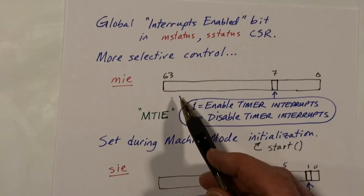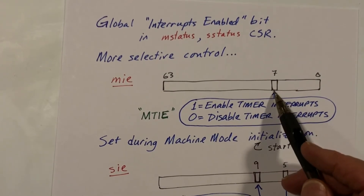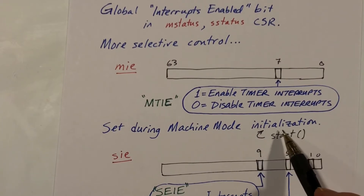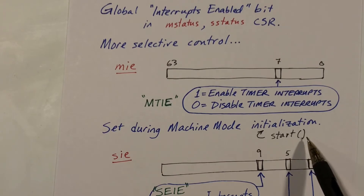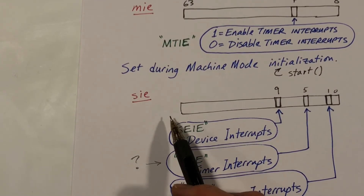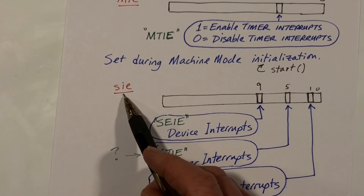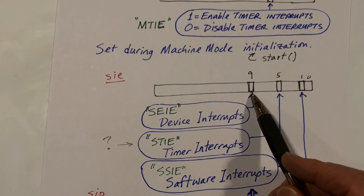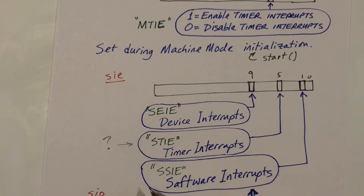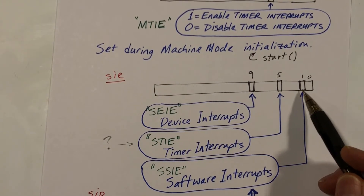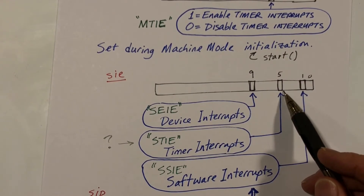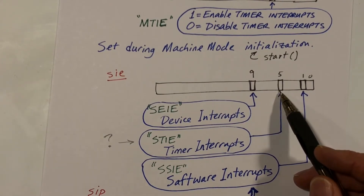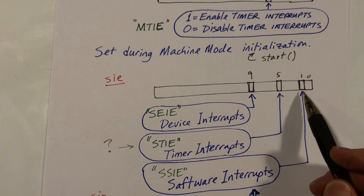For selective control, we have a bit called MTIE — machine timer interrupt enable — and we set it to one during the initialization phase in the start function, which executes in machine mode. At the supervisor mode level, the SIE register has bits we're interested in: one to enable or disable device interrupts from hardware devices, one to enable or disable software interrupts, and a bit for timer interrupts. During initialization, all these bits are set to one.